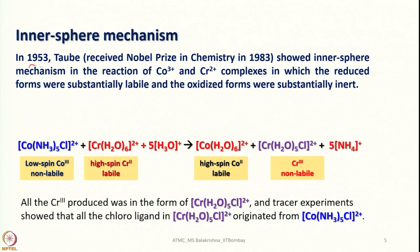Let us look into inner sphere mechanism. In 1953, Henry Taube showed the inner sphere mechanism in the reaction of cobalt 3+ and chromium 2+ complexes, in which the reduced forms were substantially labile and the oxidized forms were substantially inert. The reduced species would have more electrons and a lower oxidation state, becoming labile and forming a high spin complex. On the other hand, the oxidized species has a smaller size, and even a weak field ligand can form a low spin complex.